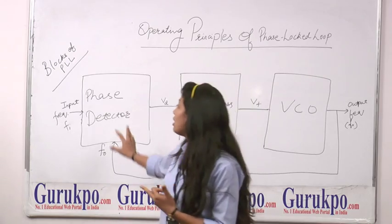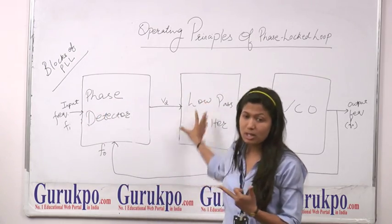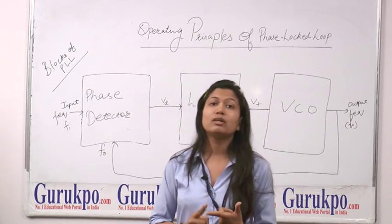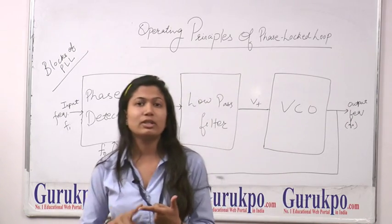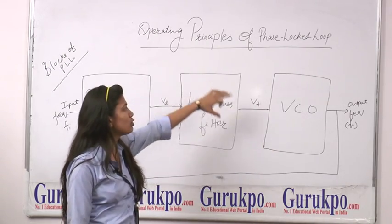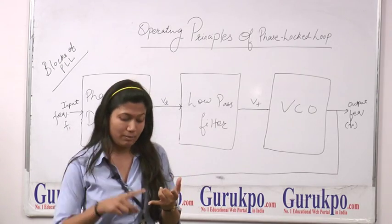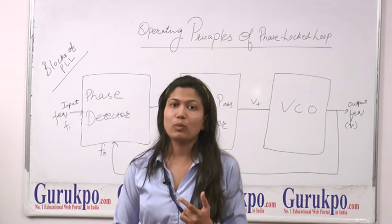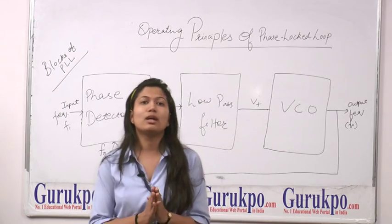When an input signal is applied, a phase error is generated. The control system acts in such a way that the VCO controls the output frequency so that the output frequency becomes equal to the input frequency. This is the basic principle of the PLL.